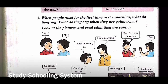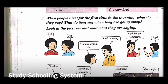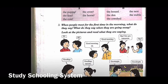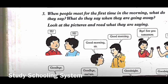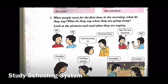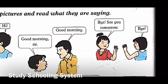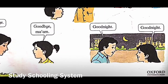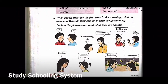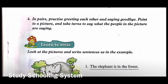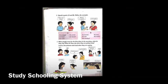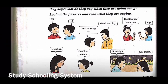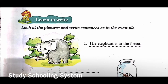Now come to part D - when people meet for the first time in the morning, what do they say? What do they say when going away? They are teaching us greetings. In the morning you say 'good morning sir.' When leaving you say 'bye, see you tomorrow' and the reply is 'goodbye ma'am.' At night you say 'good night.' For number four, practice greeting each other and saying goodbye in pairs - just say hi, good morning, goodbye, good night.